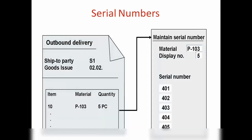For example, if you're sending five quantities of a product, the system will generate five numbers — 401, 402, 403, 405, 406, and so on. Tomorrow you can track them: for example, a customer will complain that there's a problem with product number 404. You can track it, or it could be used in other scenarios in different business processes. The serial numbers functionality means the system will generate a serial number for each and every item.